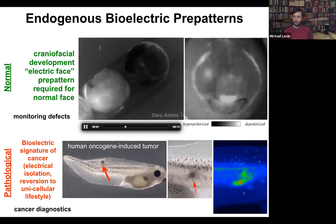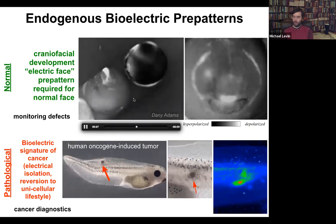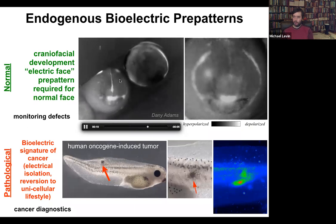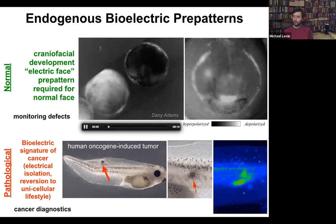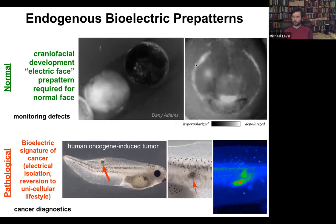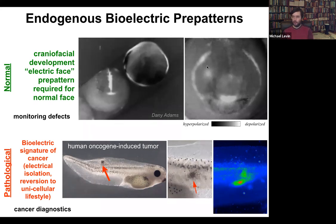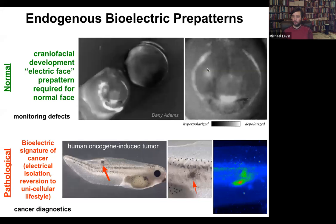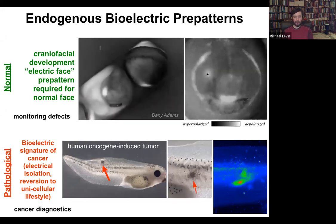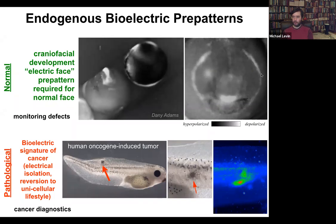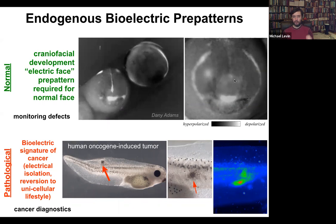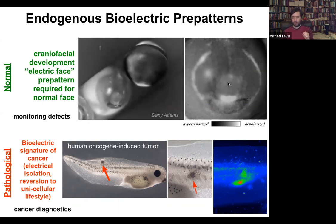Let me show you a couple of native bioelectrical patterns. This is what we call the electric face. It was discovered by Danny Adams in my group, who used voltage dyes to look at the frog embryo putting its face together. What you can see is that long before the genes come on to regionalize the face into the eye, the mouth, and everything else, all of the bioelectrical properties set up a pre-pattern — a scaffold that tells you where everything is going to be. Here's where the animal's right eye is going to be, the left eye will come in shortly, here's the mouth, here are some placodes. This bioelectrical pattern is a native instructive pattern for gene expression and for anatomy.